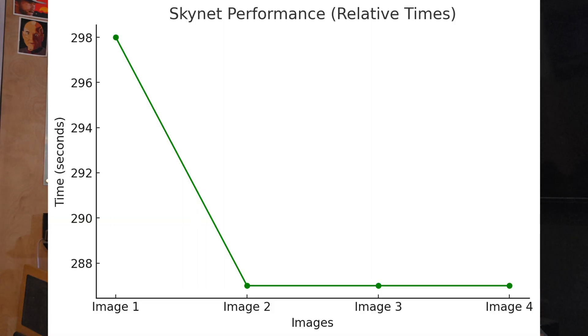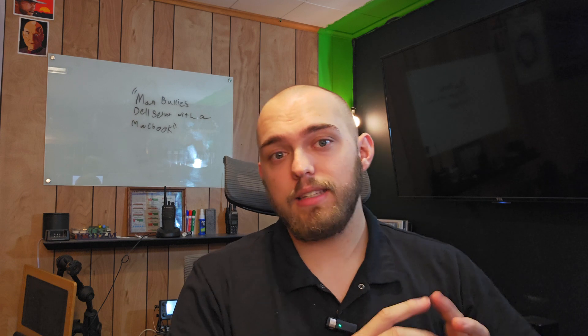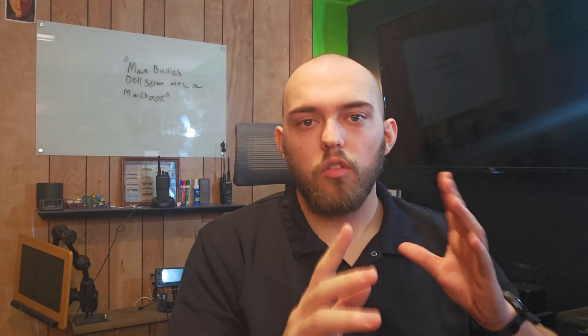The image generation finished on the AI server. The first image took 4 minutes and 58 seconds. The second image took 4 minutes and 47 seconds. The third image took 4 minutes and 48 seconds. And the fourth image took 4 minutes and 47 seconds, totaling 19 minutes and 20 seconds. That means the Skynet server has an average of 4 minutes and 50 seconds for its image generation. That's not terrible, but it's not snappy either.